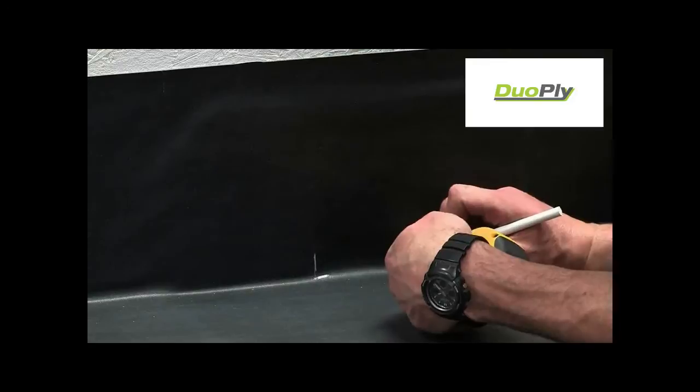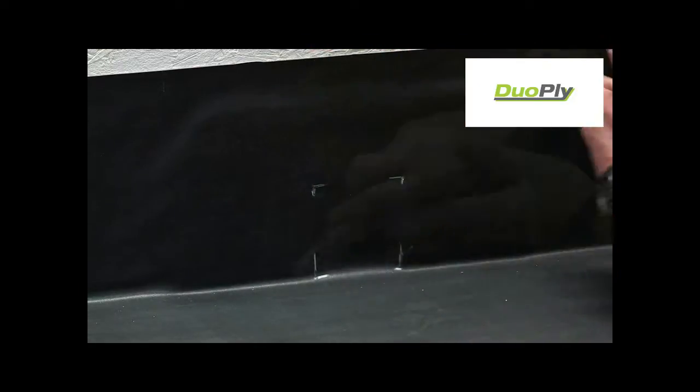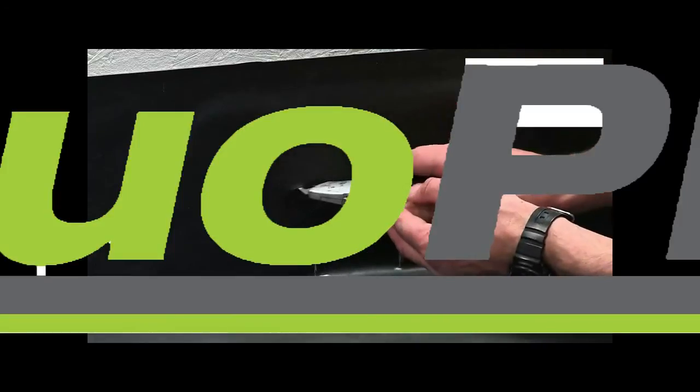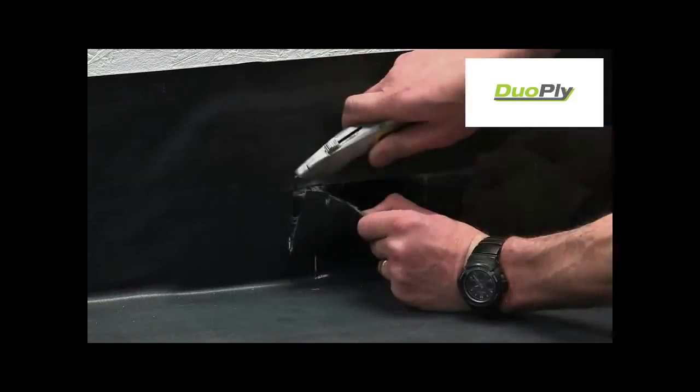Once the membrane has been installed, mark the outlet and cut through the membrane 25mm in front of the outlet and 25mm either side. The top can be cut in line with the outlet. Remove the square of membrane.